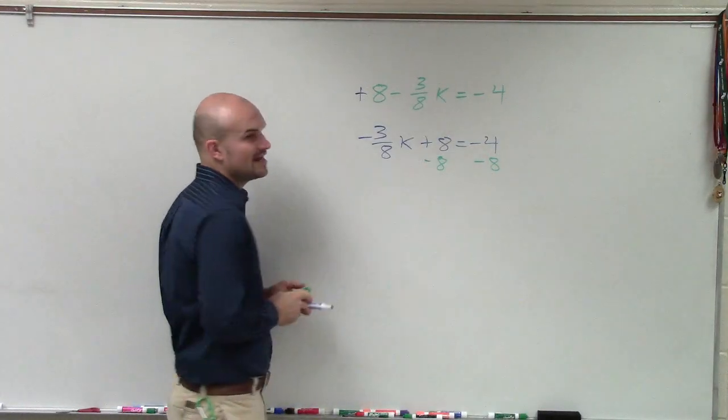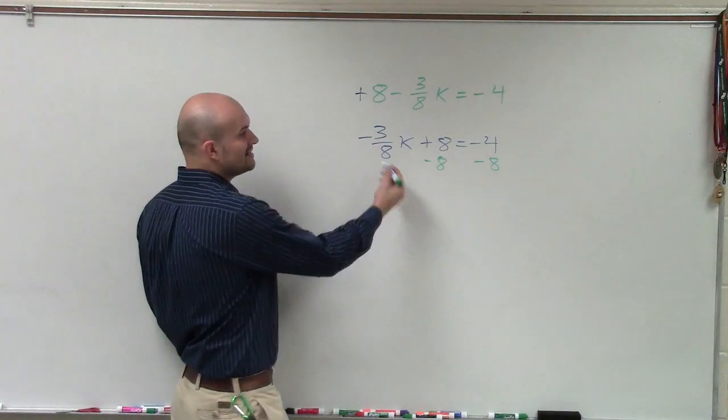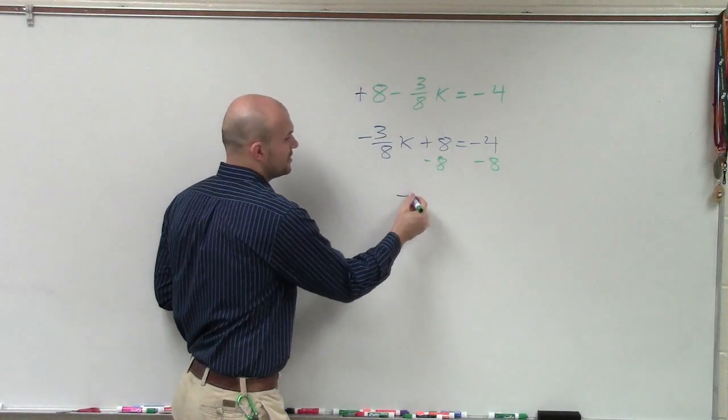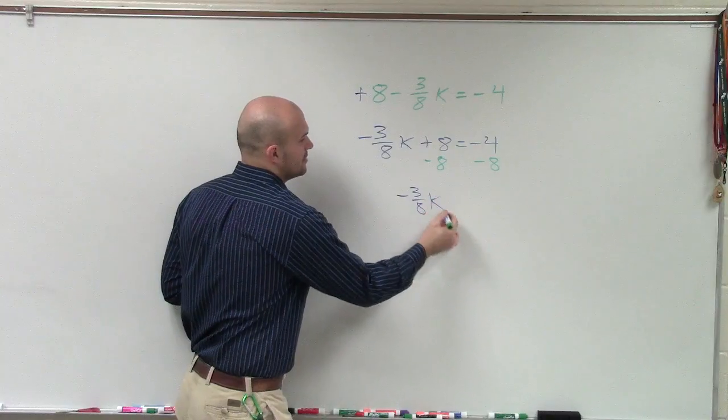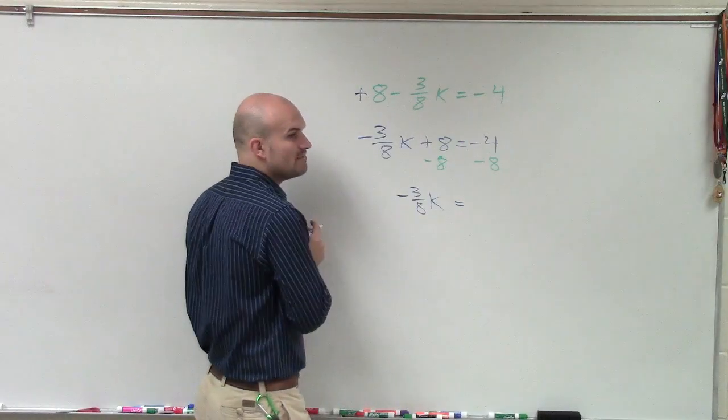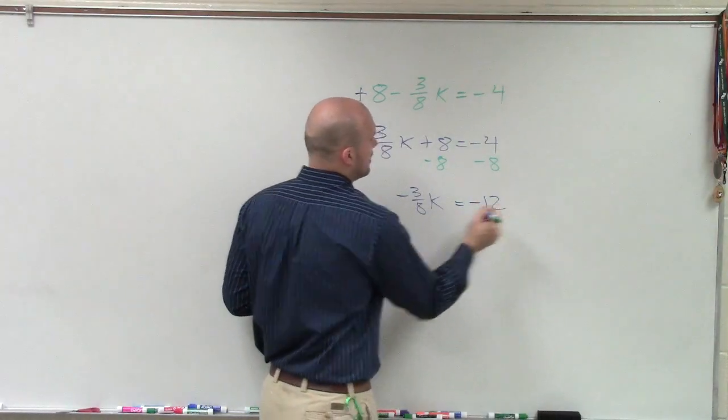Then, 8 plus negative 8 is 0, and 0 plus anything is just going to be our remaining term. So then I'll have negative 3/8 k equals negative 4 minus 8, which is negative 12.